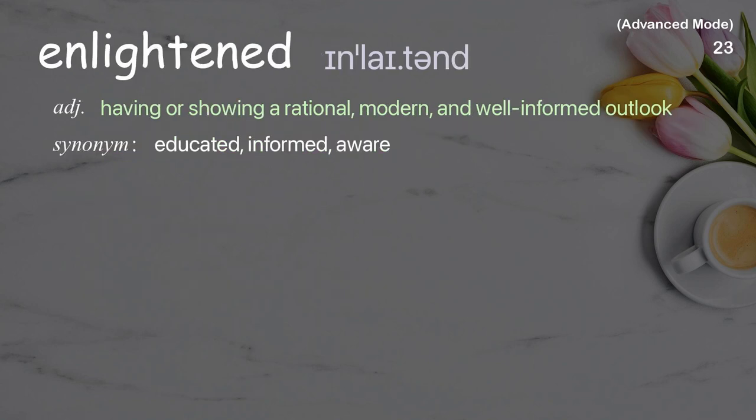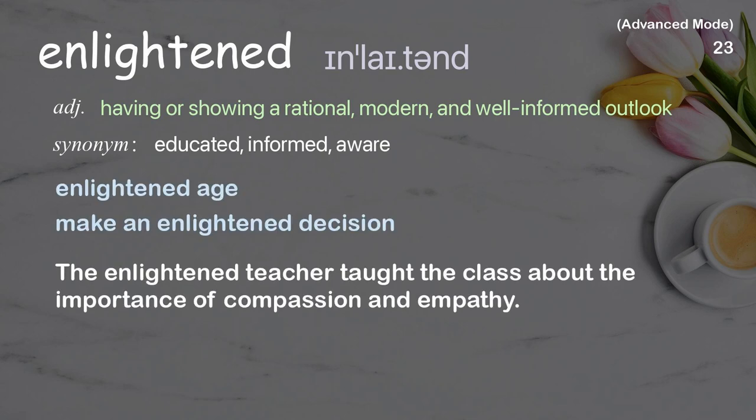Enlightened: Having or showing a rational, modern, and well-informed outlook. Examples: Enlightened age. Make an enlightened decision. The enlightened teacher taught the class about the importance of compassion and empathy.